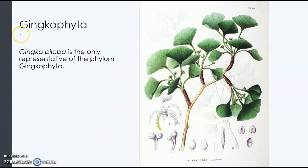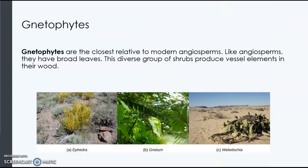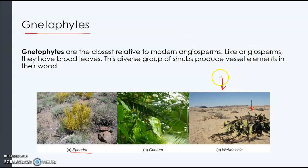Then we have ginkgophyta, or the ginkgo biloba. The gnetophytes include ephedra — you may have heard of ephedra; a compound from the ephedra plant called ephedrine has been used in weight loss, and it's kind of a natural caffeine. Then there's the welwitschia, which is interesting because it looks really old — because it is. It can live to be about a thousand years old. These gnetophytes are shrubs and another group of gymnosperms.